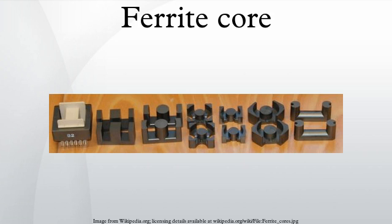Ferrites are ceramic compounds of the transition metals with oxygen, which are ferromagnetic but non-conductive. Ferrites that are used in transformer or electromagnetic cores contain nickel, zinc, and/or manganese compounds. They have a low coercivity and are called soft ferrites to distinguish them from hard ferrites, which have a high coercivity and are used to make ferrite magnets.